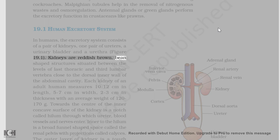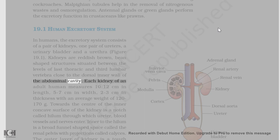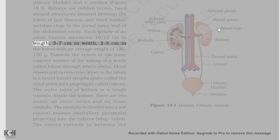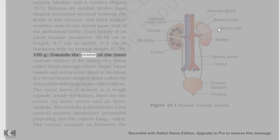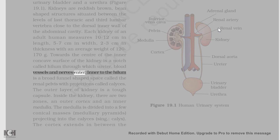Kidneys are reddish brown, bean-shaped structures situated between the levels of last thoracic and third lumbar vertebrae close to the dorsal inner wall of the abdominal cavity. Each kidney of an adult human measures 10-12 cm in length, 5-7 cm in width, 2-3 cm in thickness with an average weight of 120-170 g. Towards the center of the inner concave surface of the kidney is a notch called hilum through which ureter, blood vessels, and nerves enter. Inner to the hilum is a broad funnel-shaped space called the renal pelvis with projections called calyces.